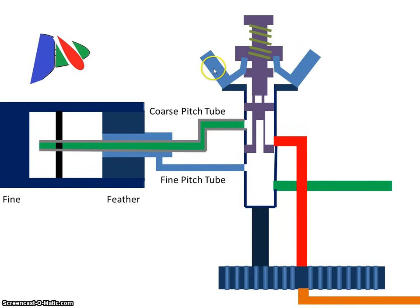The flyweights will overcome the tension in the speeder spring. As they move out, they're going to push this pilot valve up.